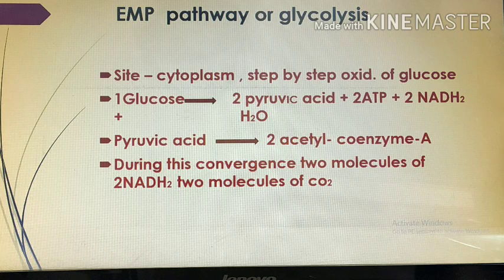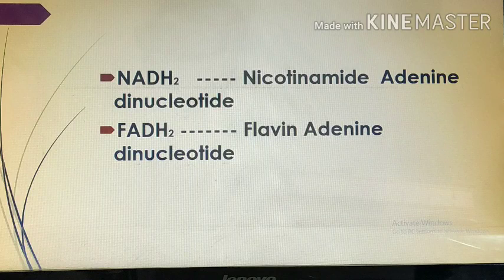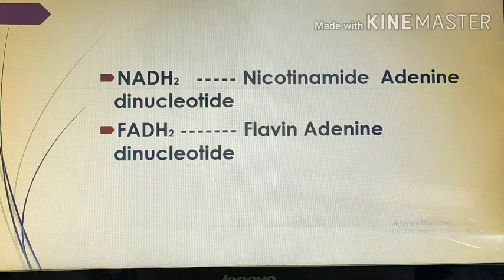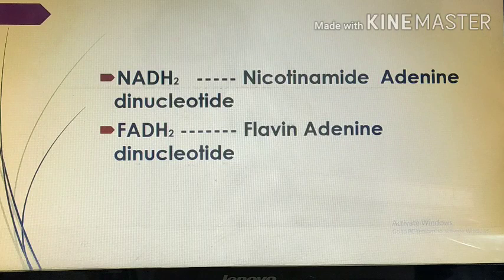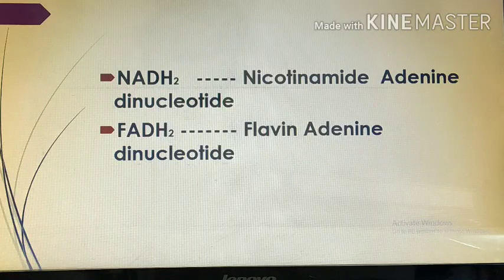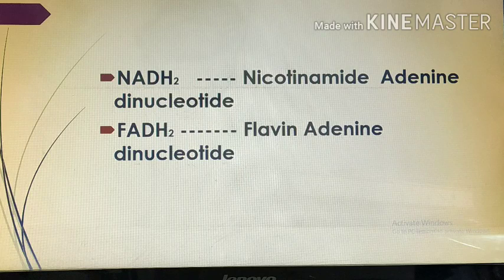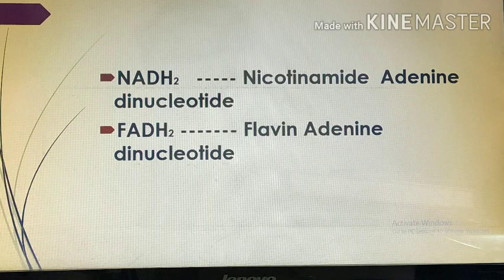NADH2 and FADH2 are names of enzymes formed in the cells and used in cellular respiration. NADH2 stands for nicotinamide adenine dinucleotide, and FADH2 stands for flavin adenine dinucleotide. The H2 indicates these are reduced forms of the enzymes — NAD after reduction becomes NADH2, and FADH2 is the reduced form of FAD.